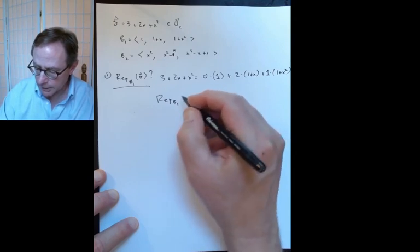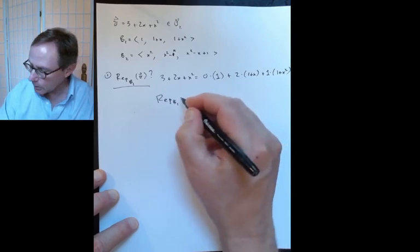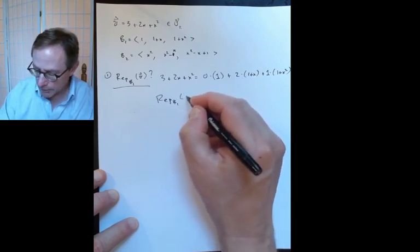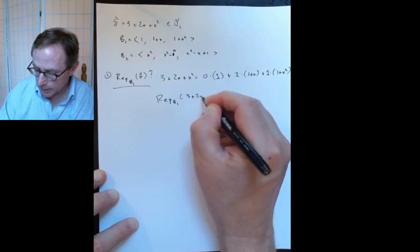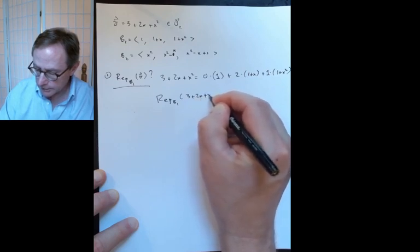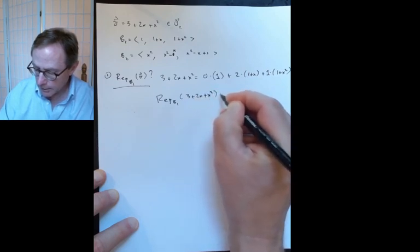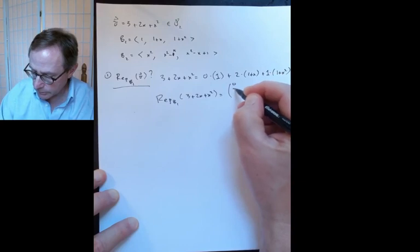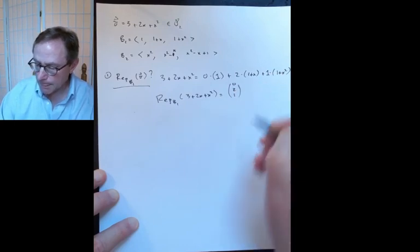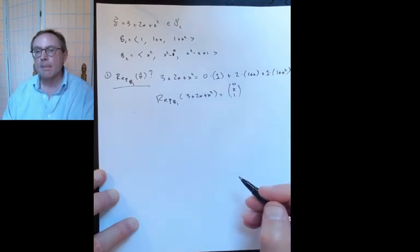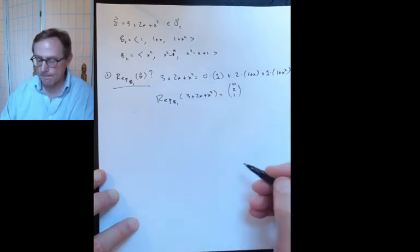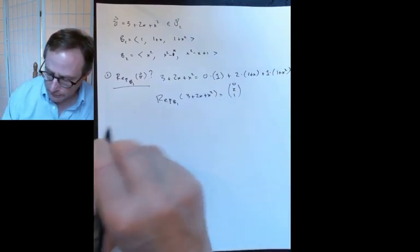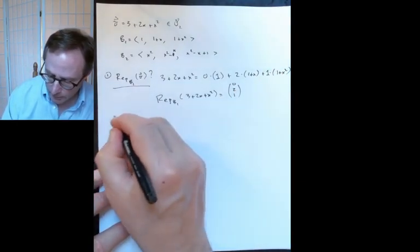The representation with respect to B1 of the vector V = 3 plus 2x plus x squared is (0, 2, 1). You've got to get them in order.